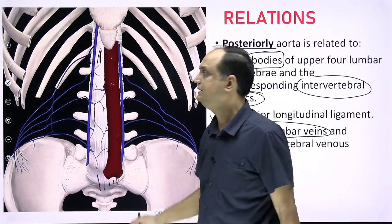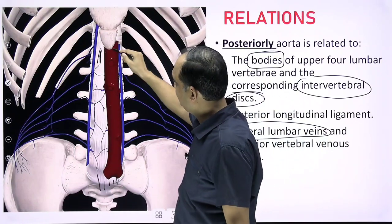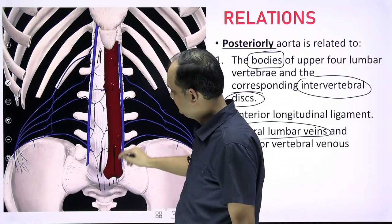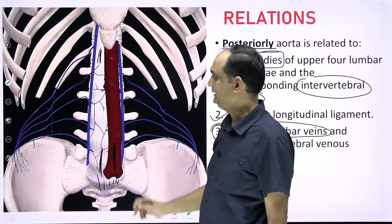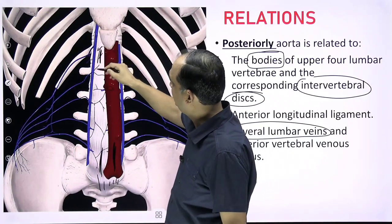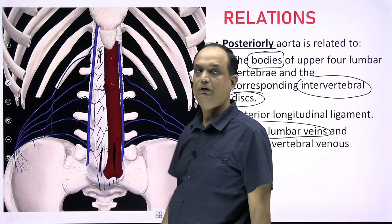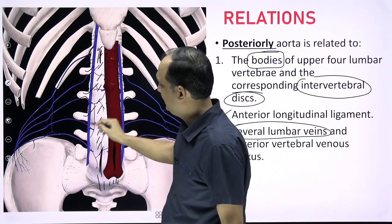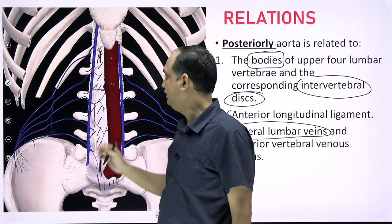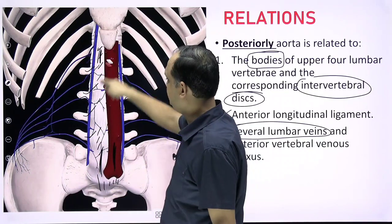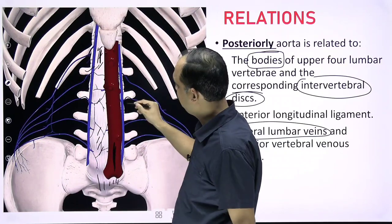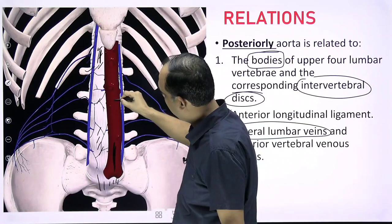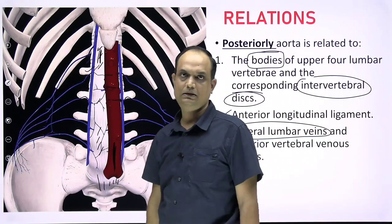In this image, you can see the aorta — importantly, it is not in the center but goes slightly left of the midline. Posteriorly, there is a white-colored band: the anterior longitudinal ligament. Behind the band are the bodies of the lumbar vertebrae. The lumbar veins are visible here, going behind the aorta.